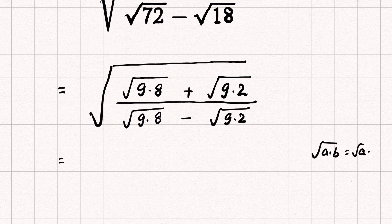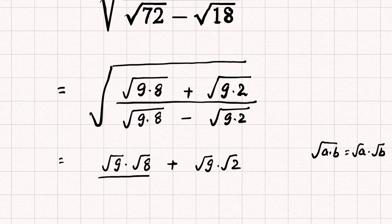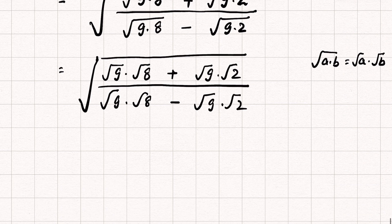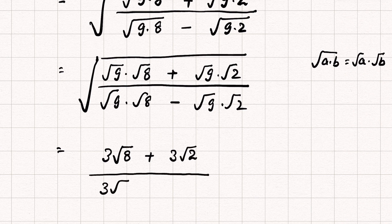Now, since √(a×b) = √a × √b, we apply this rule. The numerator becomes √9 × √8 + √9 × √2, and the denominator becomes √9 × √8 − √9 × √2, all under square root. Since √9 = 3, this simplifies to 3√8 + 3√2 over 3√8 − 3√2, under square root.